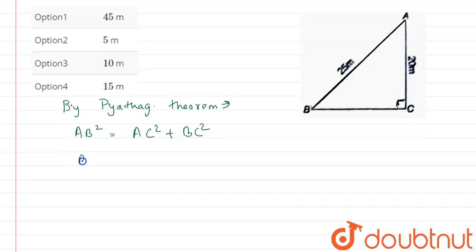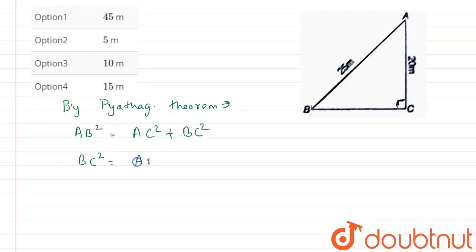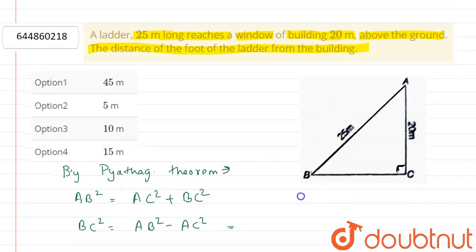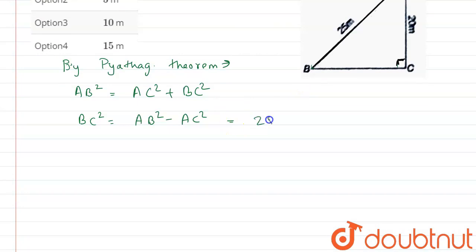So here we get BC² = AB² - AC². Here AB is 25, so we get 25² minus AC is 20, so 20².